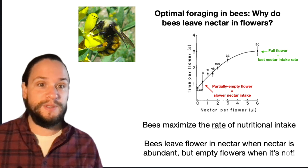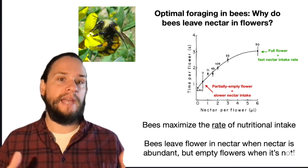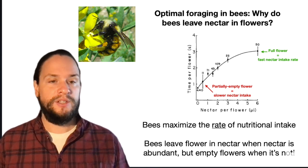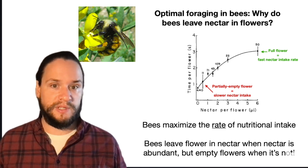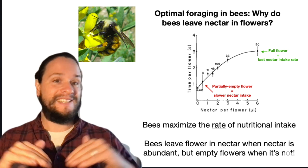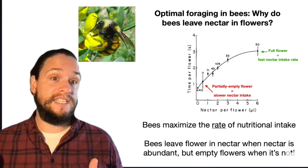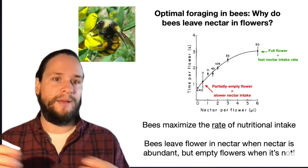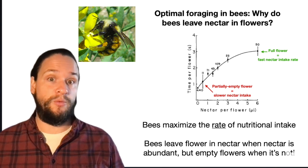And it turns out that has to do with and whether or not they exhibit that behavior depends on how much food is out in the environment. So when food is plentiful and nectar is abundant in flowers, they will leave nectar in because they can expect that the next flower they go to is full, and therefore their rate of intake is faster, and it's worth the time sort of switching flowers to get to that more abundant, fast intake rate of flower.